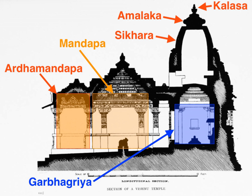The Gadag style of architecture is also called Western Chalukya architecture. The style flourished for 150 years, during which about 50 temples were built. Some examples are the Saraswati temple in the Trikuteshwara temple complex at Gadag, the Doddabasappa temple at Dambal, the Kasivisvesvara temple at Lakkundi, and the Amriteshwara temple at Annigeri, which is marked by ornate pillars with intricate sculpture. This style originated during the period of the Kalyani Chalukyas under Someshvara I.